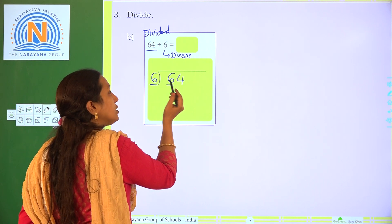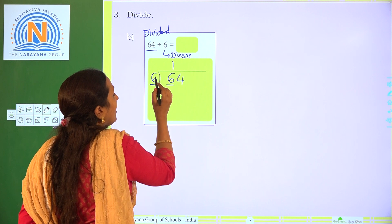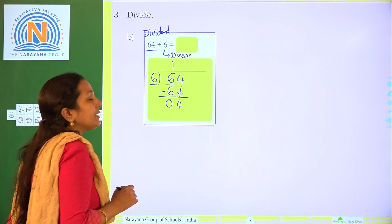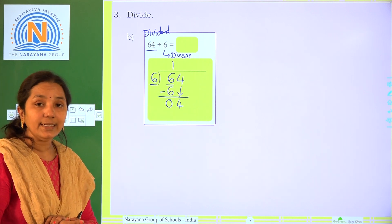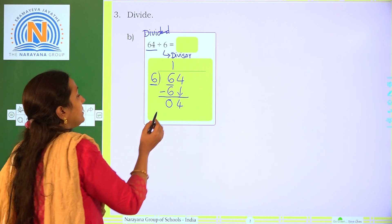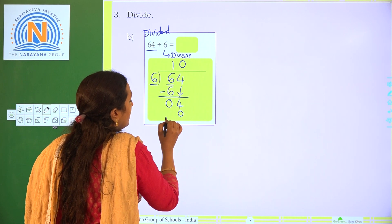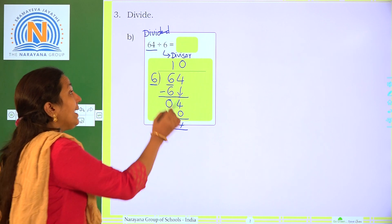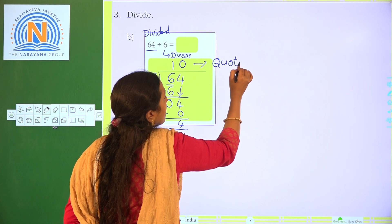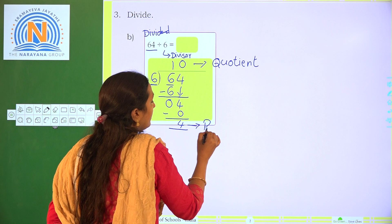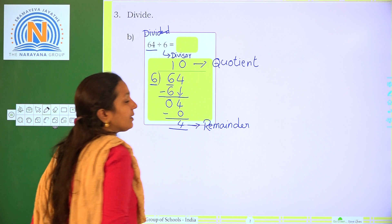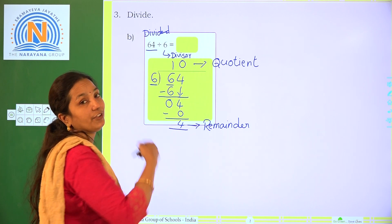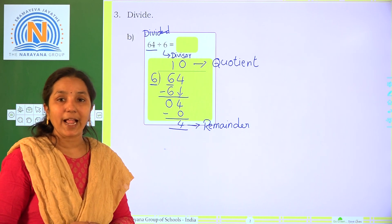So here, 6 into 6 — one time. 1 times 6 is 6. 6 minus 6 is 0. Now bring down the 4. But 4 is less than 6, so we cannot divide — we write 0. 0 times 6 is 0. 4 minus 0 is 4. So the quotient is 10 and the remainder is 4. You can verify: 6 times 10 plus 4 equals 64. Once again practice. Thank you.